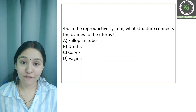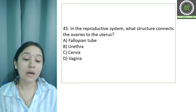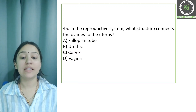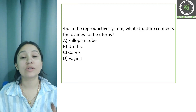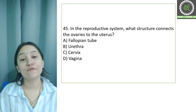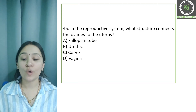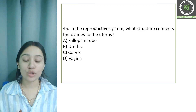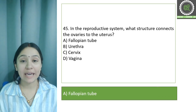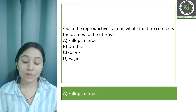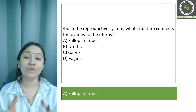Question number 45: In the reproductive system, what structure connects the ovaries to the uterus? Options are: A) fallopian tube, B) urethra, C) cervix, and D) vagina. The correct answer is option A, fallopian tube. The fallopian tube is the structure that connects the ovaries to the uterus.